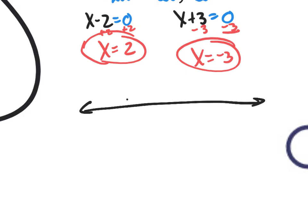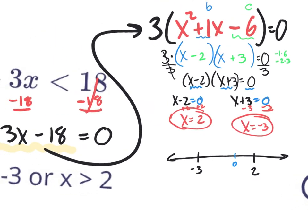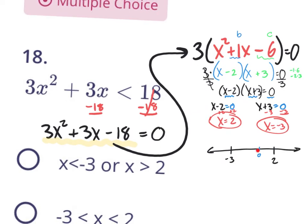So we're going to do a number line. We're going to put negative 3 over here, positive 2 over here, and 0 is somewhere right here in the middle. Let's test some areas. I could test the value 0 and see if it's an answer. I'm going to go back to the original and plug in 0 for x — the whole thing becomes 0. So the question is, is 0 less than 18? And the answer is yes. So by testing 0, I know it works, which means all the values in between negative 3 and 2 will work.